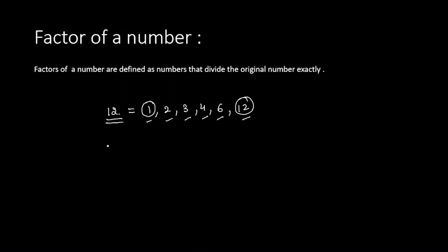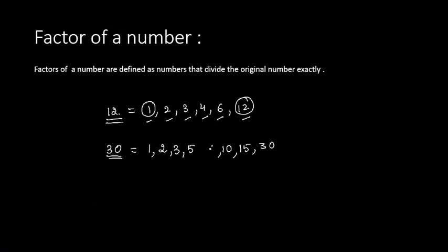If we have another number, suppose there is a number 30. We have to find out the number of factors of 30. Factors of 30 means the numbers which can completely divide 30 without leaving a remainder. For example, 1 and 30 are factors. Next, 2 times 15 is also 30, so 2 and 15 are factors. 3 times 10 is also 30. 5 times 6 is 30. Pause the video and think about it.